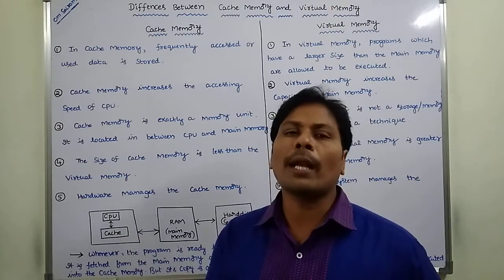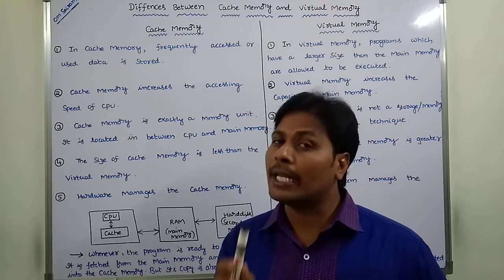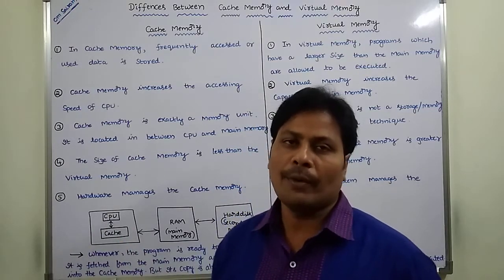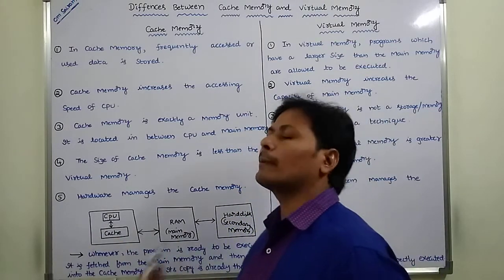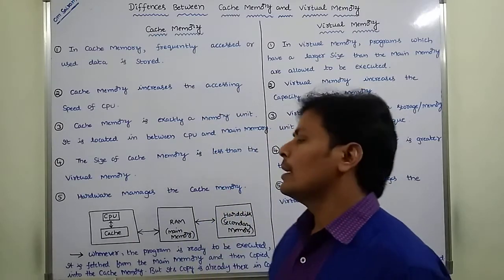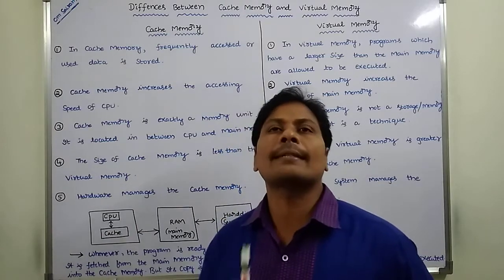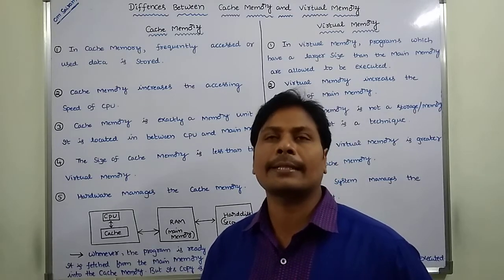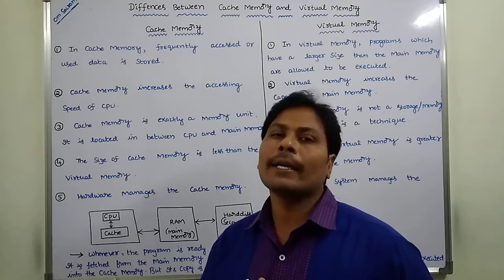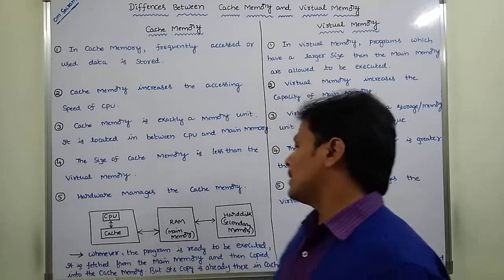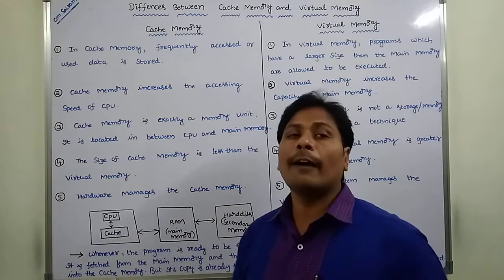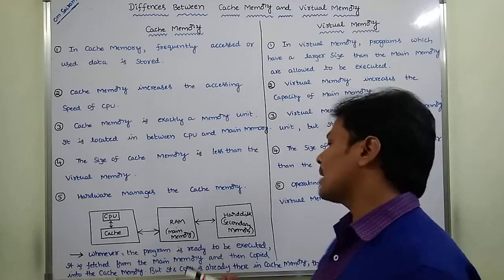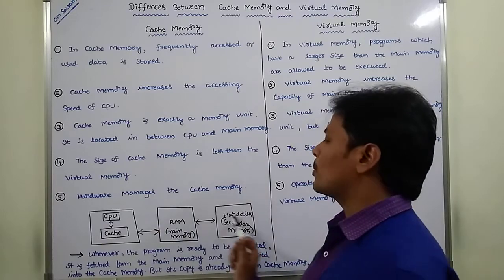Whenever the same programs occur again in the near future, the CPU can take the programs from the cache memory; otherwise they are taken from the main memory. So we can say that cache memory contains the recently accessed data or programs. This is a description of where cache memory is located and what is the purpose of cache memory.